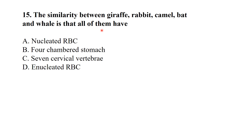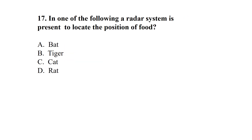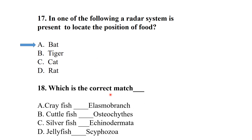All of these are mammals, but the very unique character is the seven cervical vertebrae. Which of the following is an egg-laying mammal? — Spiny anteater is an egg-laying mammal. A radar system is present to locate the position of food — bats. The correct match: jellyfish belongs to class Scyphozoa.